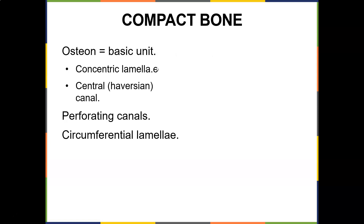The basic unit of compact bone is called the osteon. You have concentric lamellae, a central canal called the Haversian canal, and perforating canals — also known as Volkmann's canals — which deliver nutrients to the bone. You also have circumferential lamellae. All of these deliver nutrients and blood supply to the bone. Because bone has probably the best blood supply of all connective tissue, a fracture can heal in four to six weeks, unless it's severe and needs screws and plates.